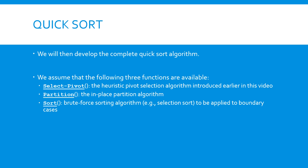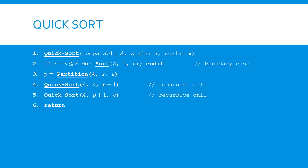Now, let's summarize the complete quicksort algorithm. Assume that we have three functions available: the simple heuristic method for the pivot selection procedure, selectPivot; the O(n)-time in-place partition procedure, partition; and the brute force sorting algorithm, sort. Here is the pseudocode for the quicksort algorithm. It is implemented as a recursive function. Line 2 handles the boundary case. Line 3 partitions the list into two subsets. Lines 4 and 5 recursively sort the subsets.